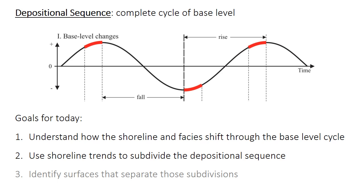So this video has two primary goals. First, is to understand how the shoreline shifts at different points in this base level cycle, and to introduce some terms describing those shifts. And second, we're going to use those shoreline trends to subdivide the depositional sequence into packages called systems tracts. Finally, I'll very briefly introduce the names of surfaces that separate those systems tracts, or those subdivisions of the depositional sequence. We're going to use these terms really extensively when we're studying the coastal depositional environment, but you're going to learn more about this particular sequence stratigraphic surfaces as they come up later on.